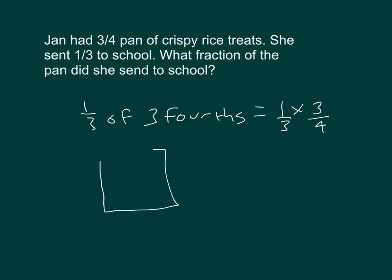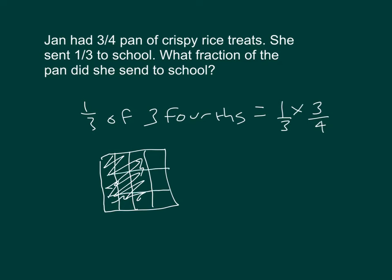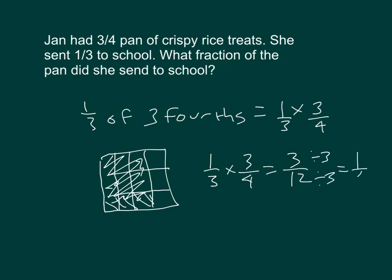Let's work that out. So we draw three-fourths first and shade that in. And then we're looking at one-third of that amount — one-third of three parts. That gives us three out of twelve. And then we can reduce to get one-fourth.